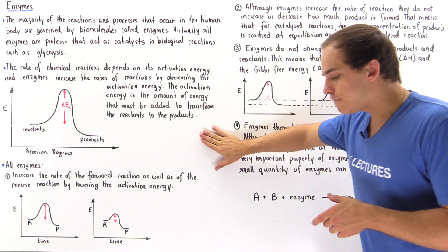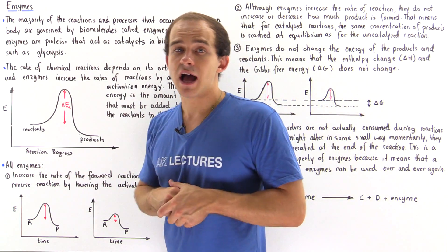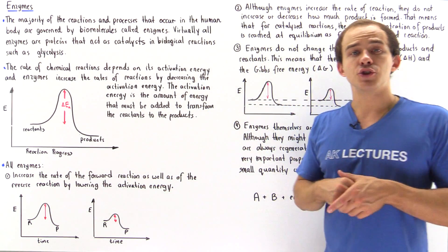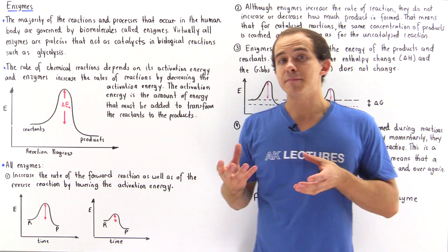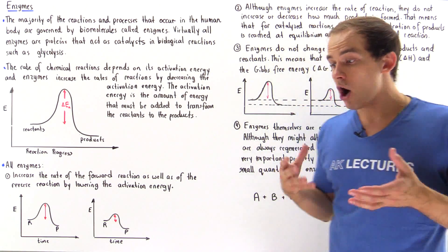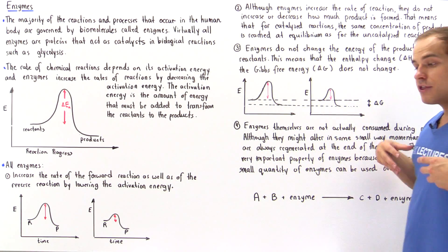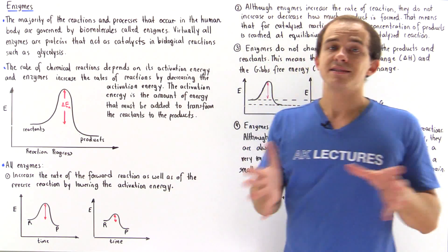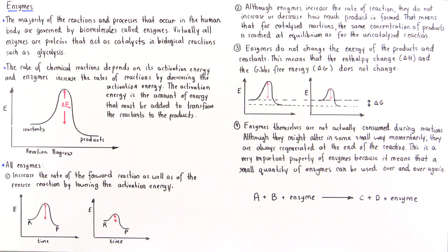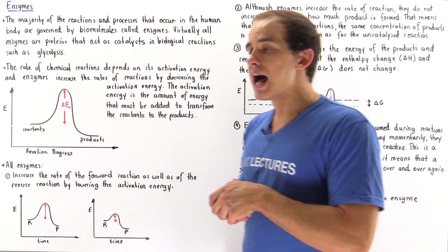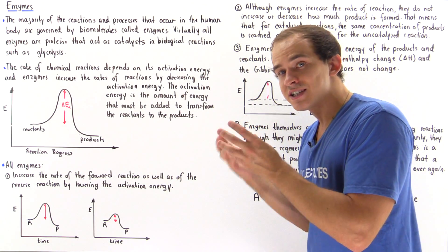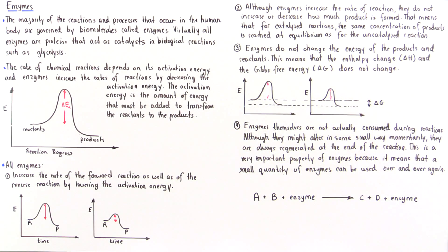The final important point: enzymes are not actually used up. They are not consumed in any reaction. If the enzyme is altered in some way — and usually they are — they are regenerated; the final enzyme is exactly the same as the initial enzyme. Although enzymes might alter — for example, when the reactant binds to the active site of our enzyme it might change its shape ever so slightly — at the end of the reaction, our enzyme is always regenerated.